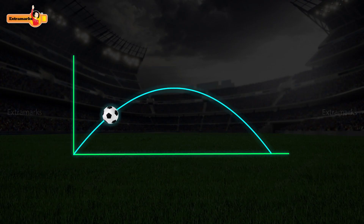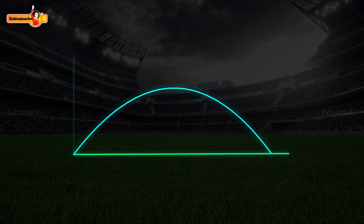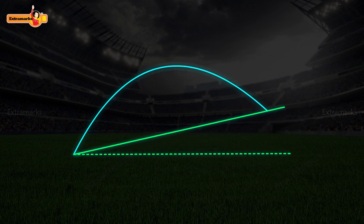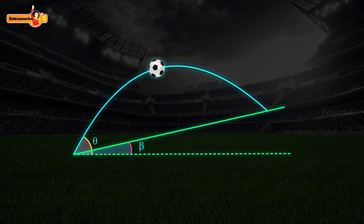You must have seen the projectile motion of a ball on a horizontal plane. Now tilt this horizontal plane in such a way that it makes an angle beta with the horizontal. Project a ball at an angle theta with the horizontal.